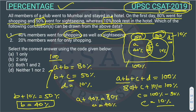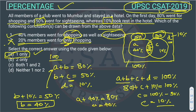The second conclusion states that 20% of members went for only shopping — that would be region A only. But A equals 40%, not 20%, so this conclusion is wrong. Therefore only the first conclusion is correct. I hope you all understood; if you still have any problem, you can comment and connect with us.